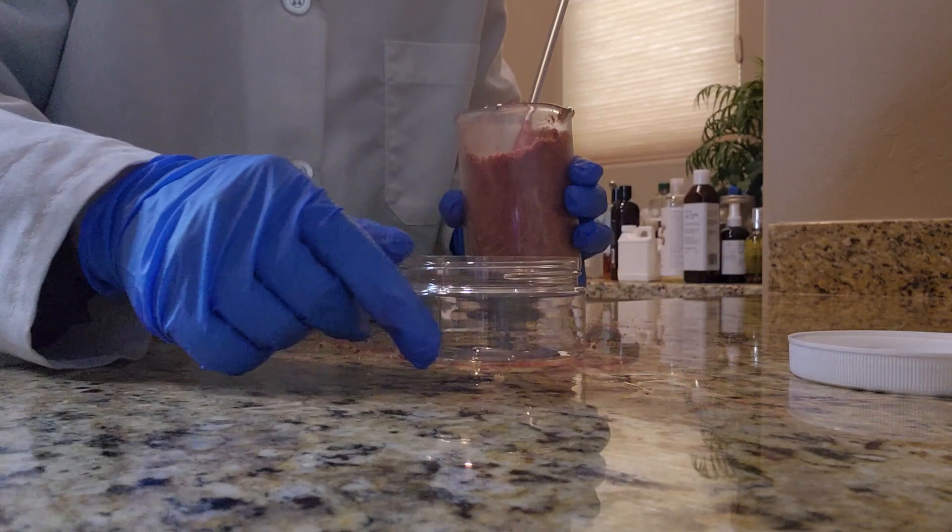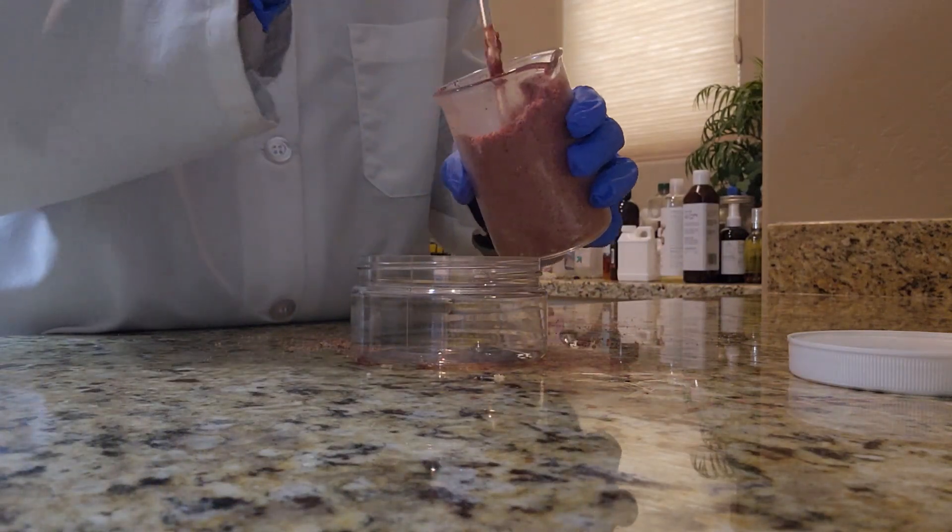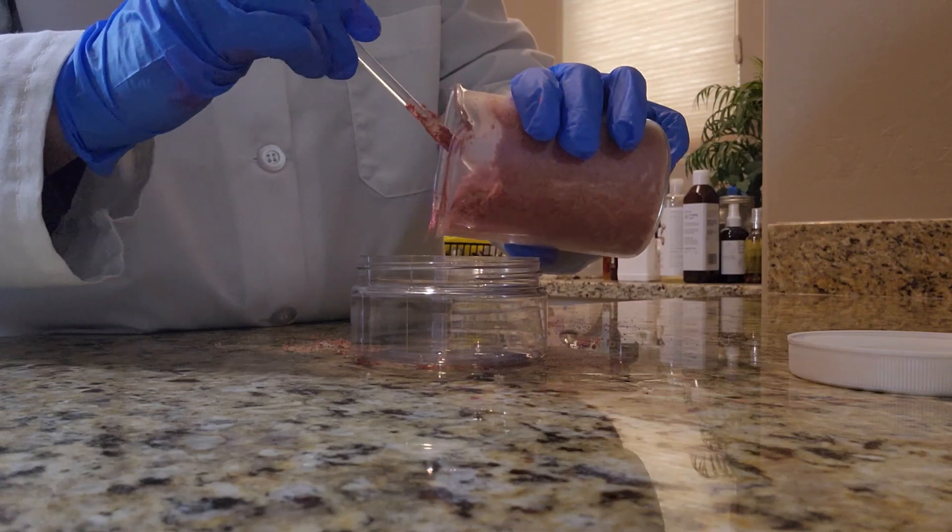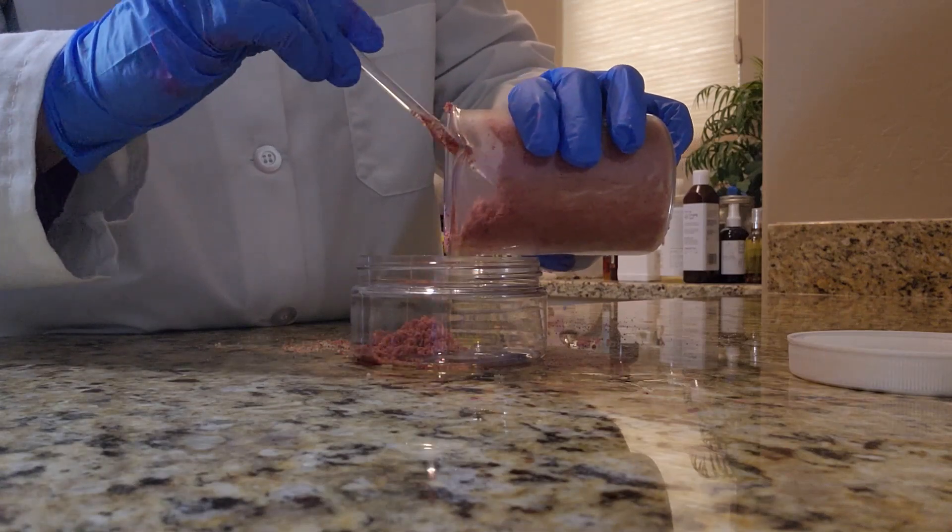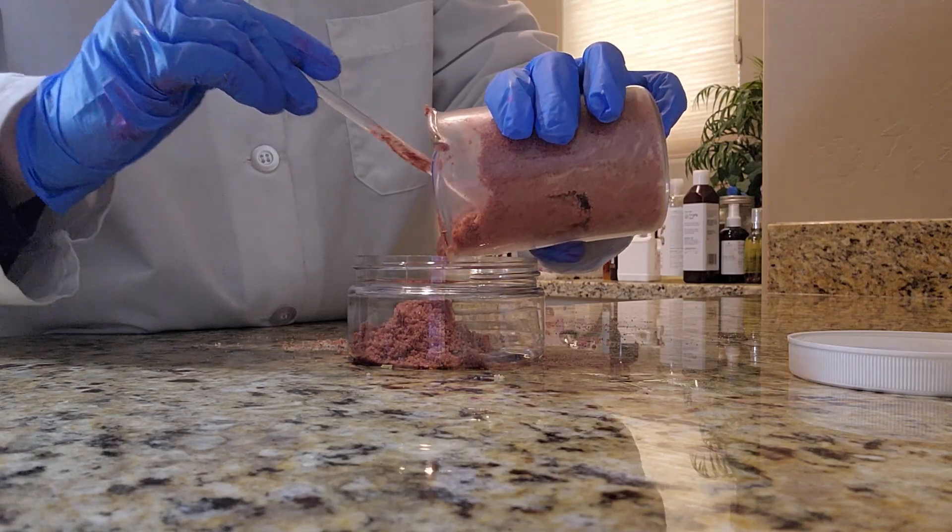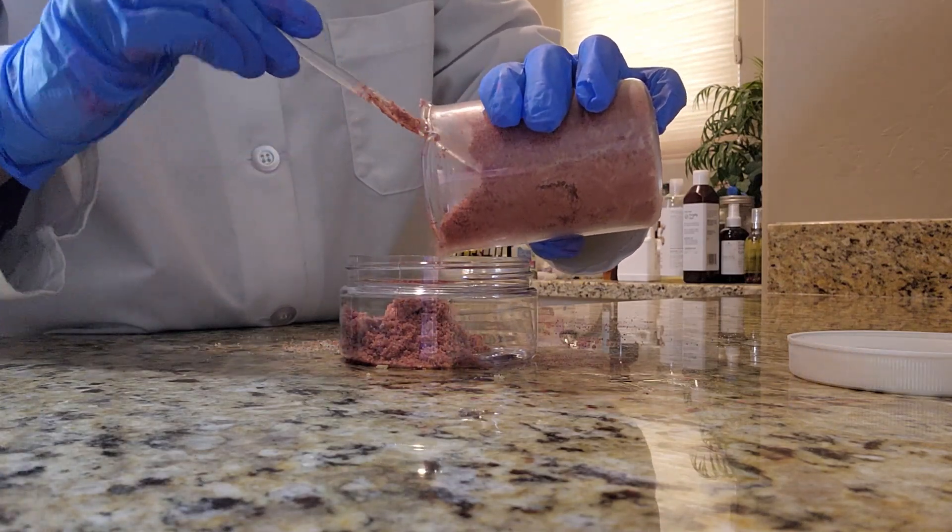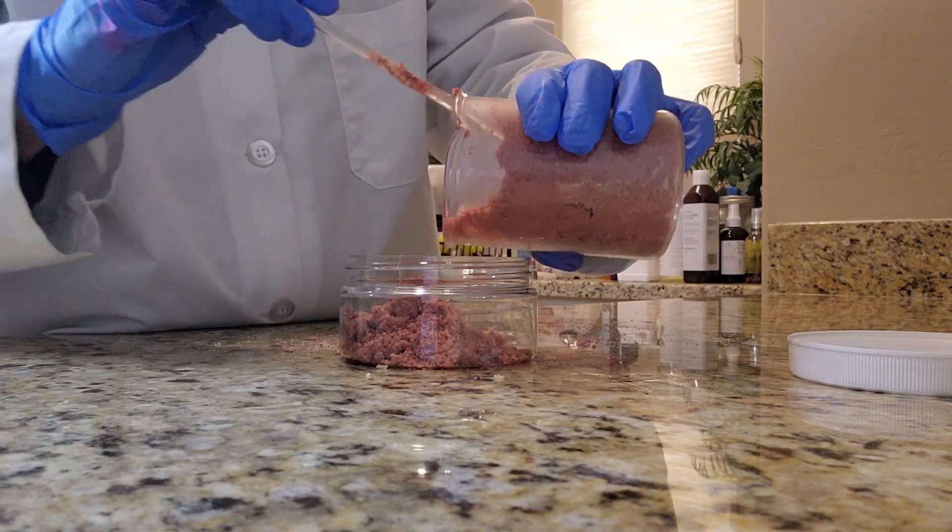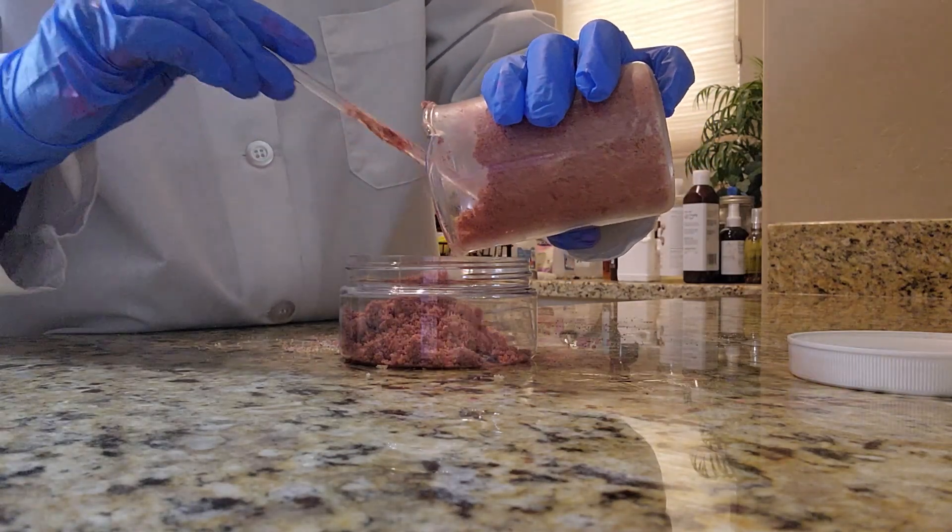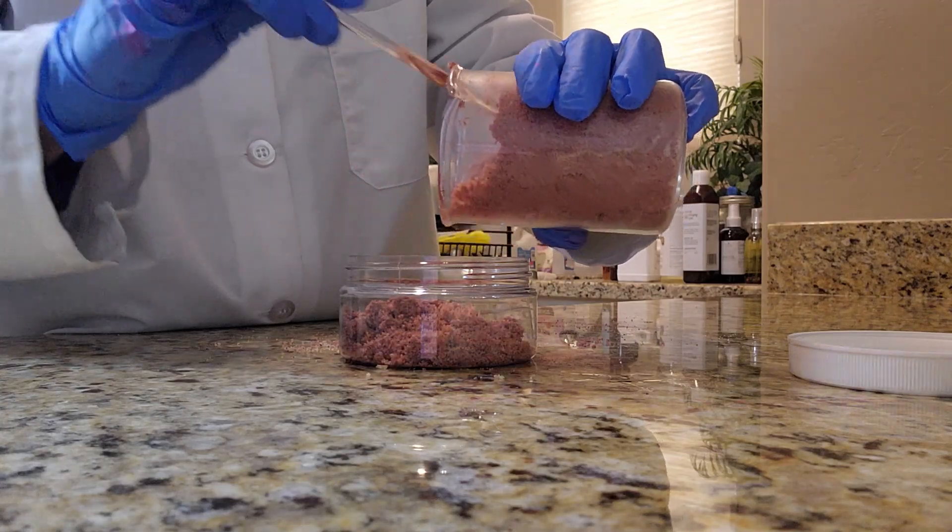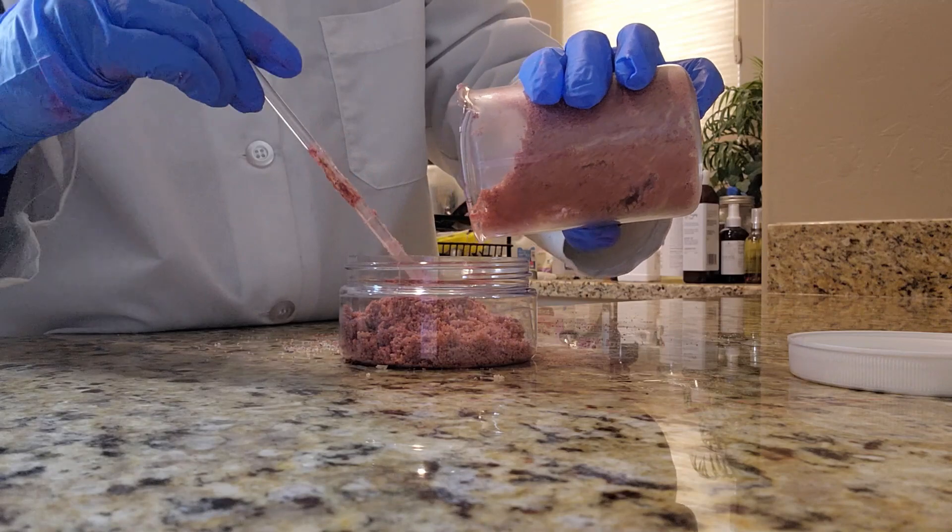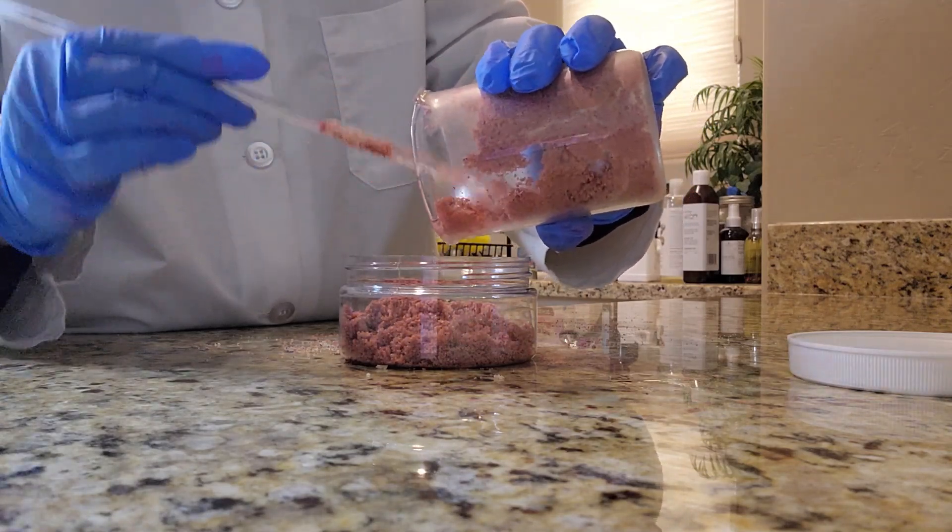I now have achieved the desired color that I want for my scrub so I'm going to put this into my container here. This makes exactly eight ounces. To use this foot scrub you're going to just apply it to dry skin and then with the palm of your hand massage it in. Once you're done massaging it you're going to want to follow up by rinsing it thoroughly off with warm water and that basically is how you're going to use it.